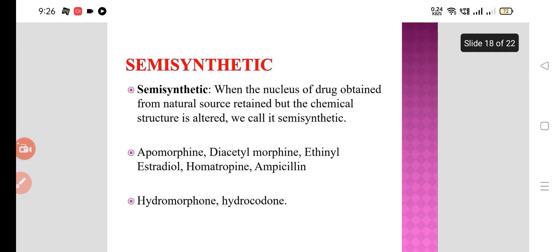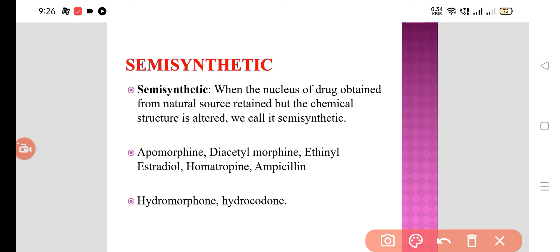We have seen the semi-synthetic ones. How do we define semi-synthetic? When the nucleus of the drug obtained from the natural source is retained but the chemical structure is altered, we call it semi-synthetic. Examples of semi-synthetic drugs include apomorphine, diacetylmorphine, ethinyl estradiol, homatropine, ampicillin, hydromorphone, and hydrocodone.